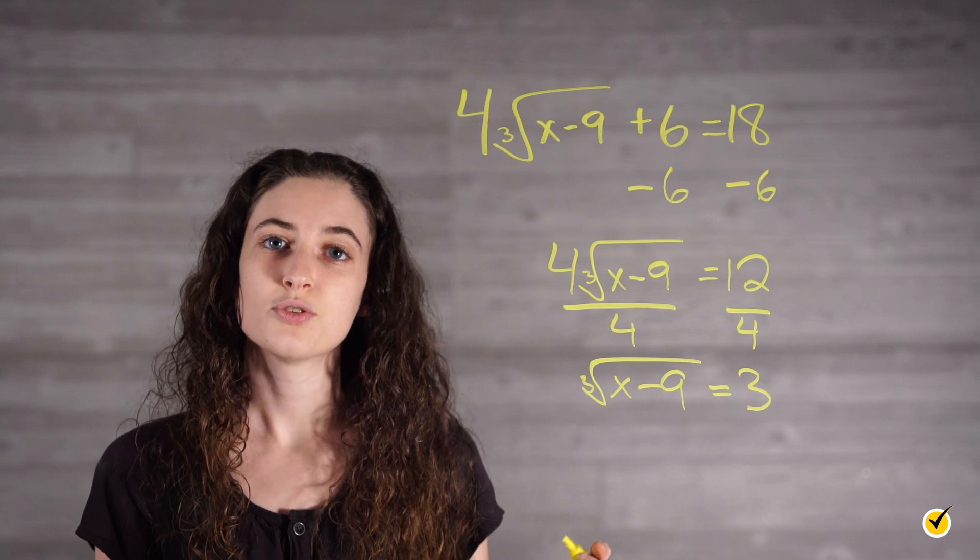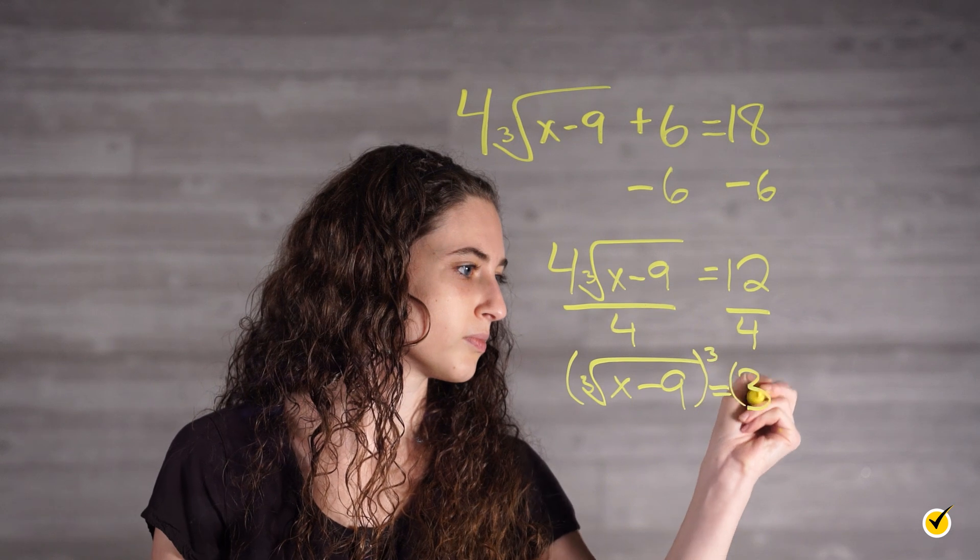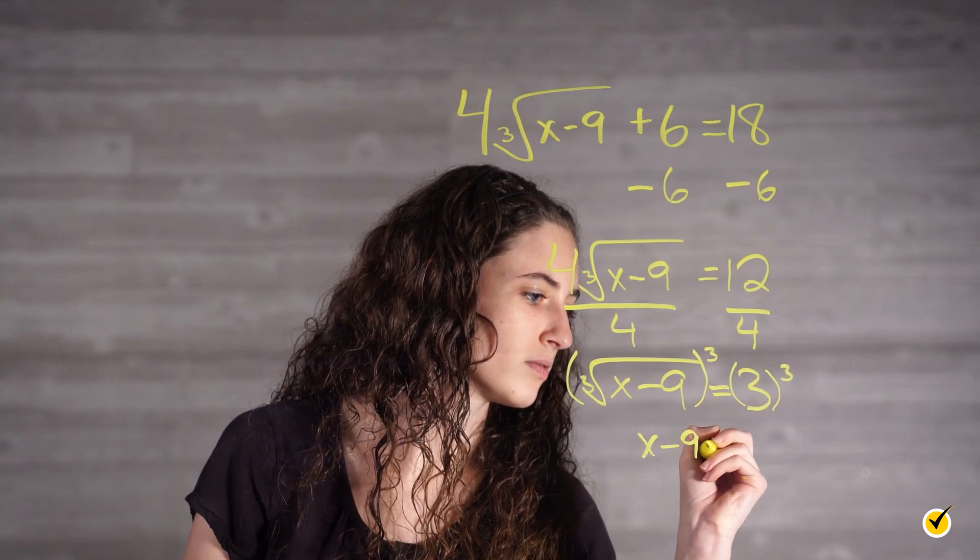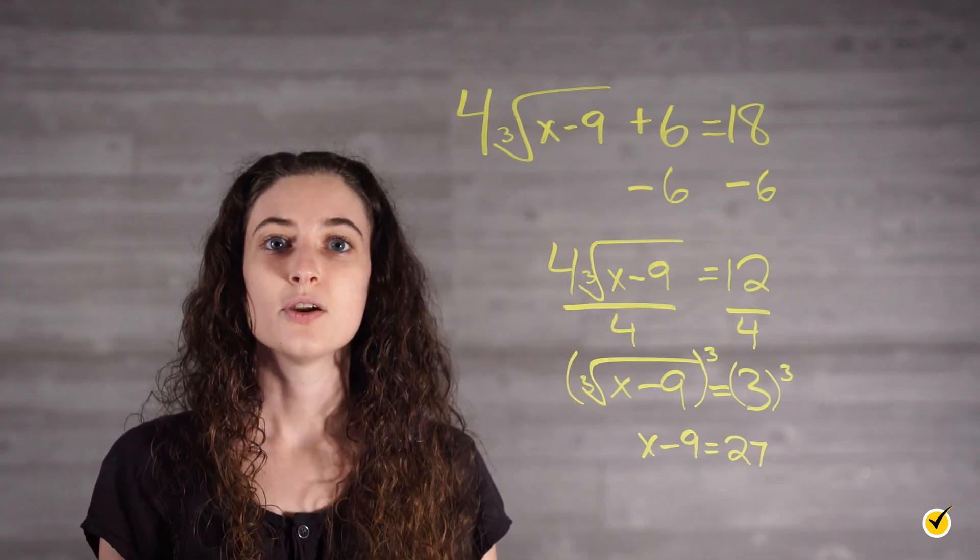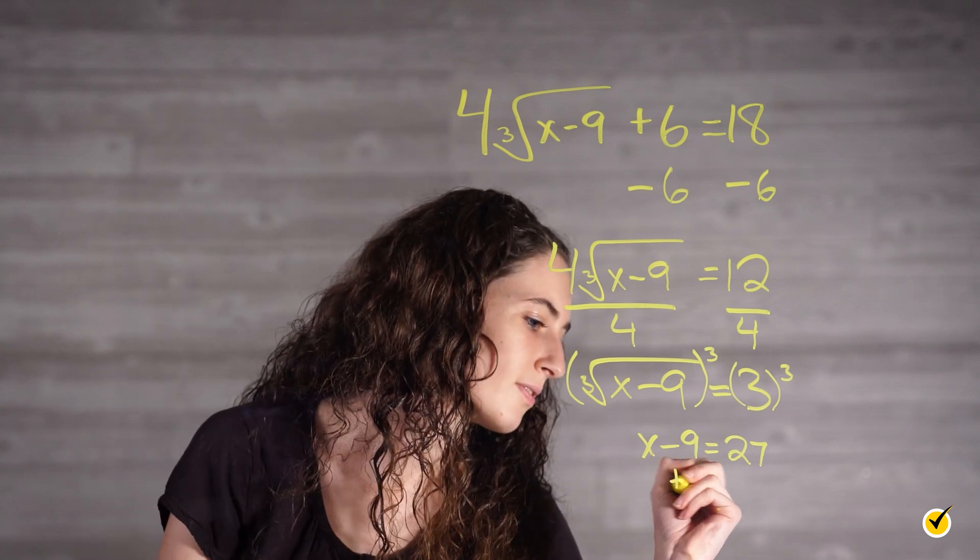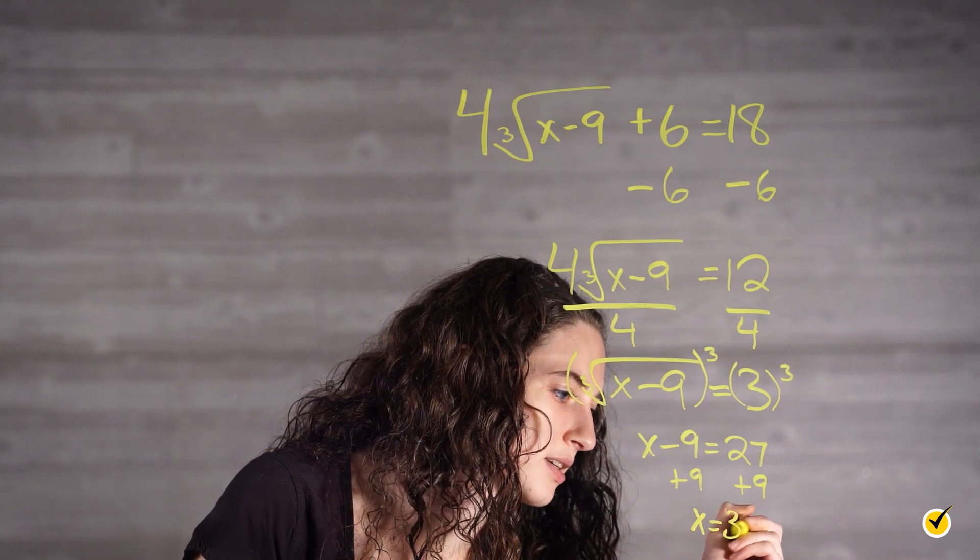Now we undo the root by cubing both sides. This gives us x minus 9 is equal to 27. Finally, we add 9 to both sides to get our final answer. x equals 36.